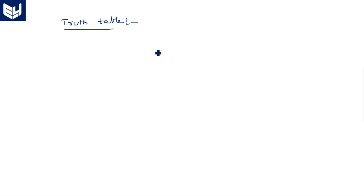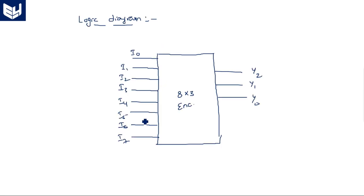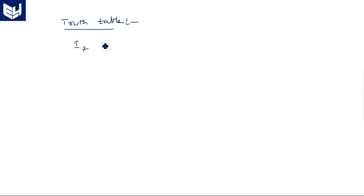We are not using an enable pin here. If you want to keep an enable pin, you can take it directly — a ninth pin will be added as enable pin. When enable is equal to 1 the chip is activated and based on the input selection the output will come out. When enable is equal to 0 the chip is disabled and whatever the input condition, the output is simply zeros. I am discarding the enable pin here.